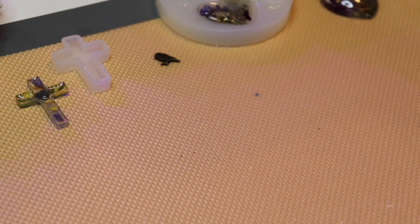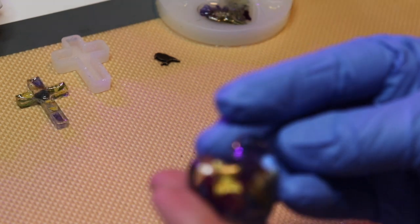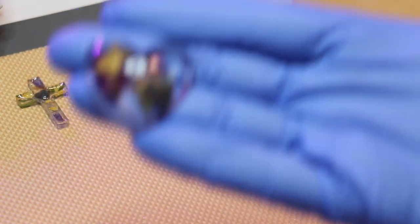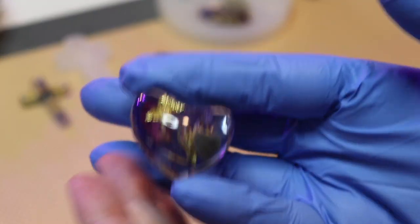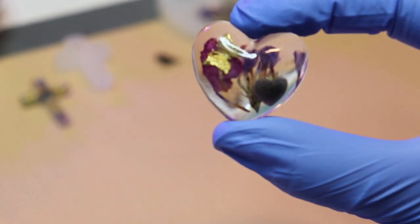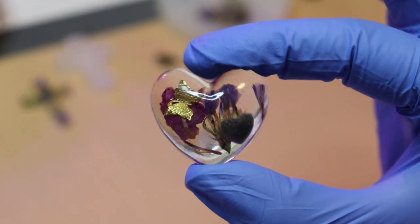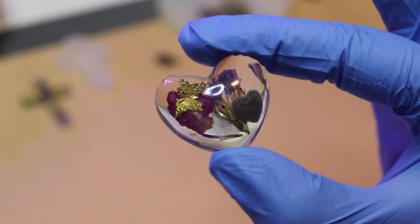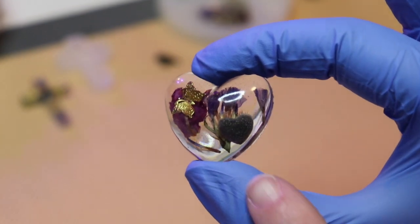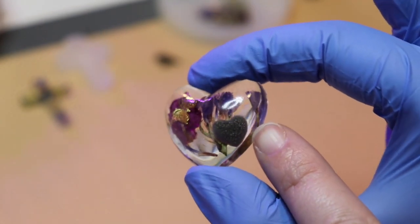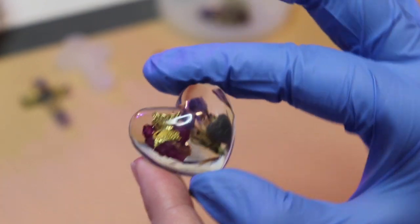I have now gotten to the point where I am on my second cremation heart. This is the first one I made. You can't really see it that well with my glove, but there it is. There's some flowers, a heart, there's a rose petal, and then the heart is the heart of ash, and then there's a butterfly. It's very pretty.